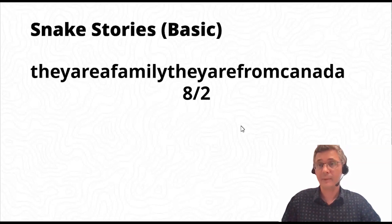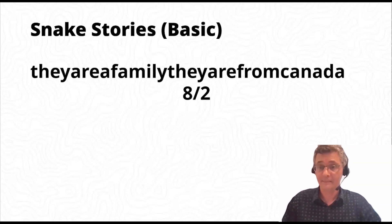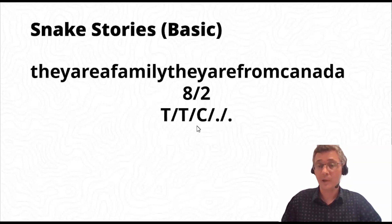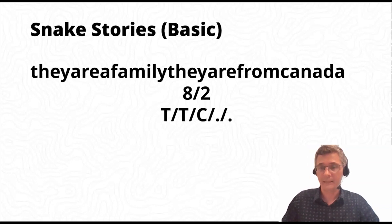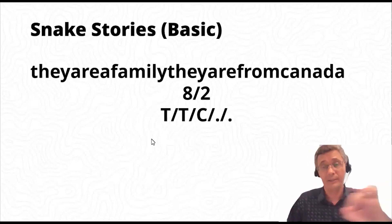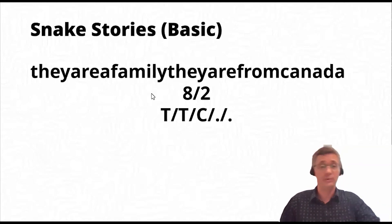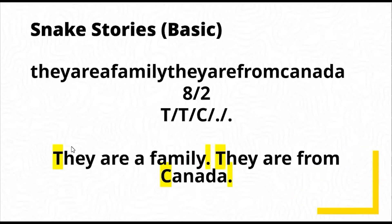If it's too difficult, you can give them a clue. For example, numbers — eight and two — mean there are eight words and two sentences. That information helps them write out the sentences. Or another thing we could do is give them the punctuation they need. Here we've got two full stops and three capital letters. Students have to rewrite the text. The answer is: 'They are a family. They are from Canada.' Very simple sentences.